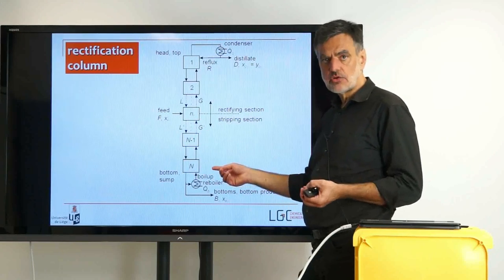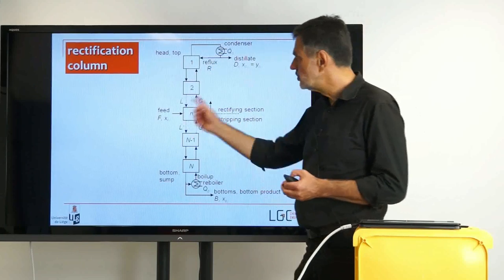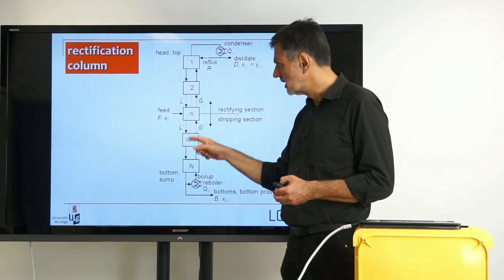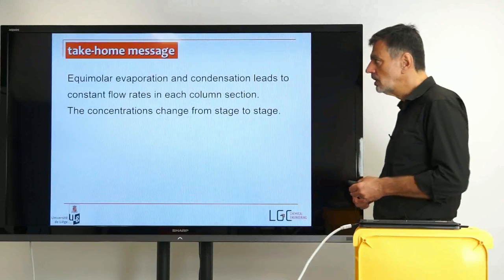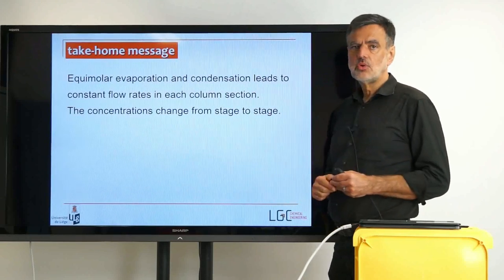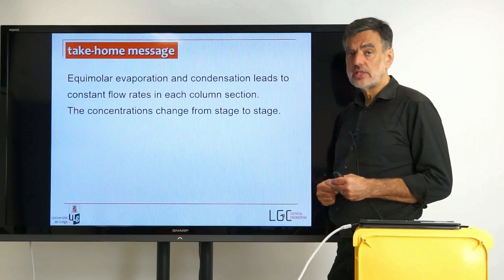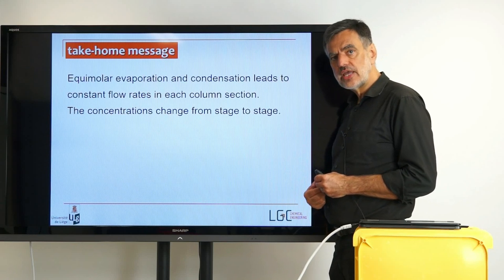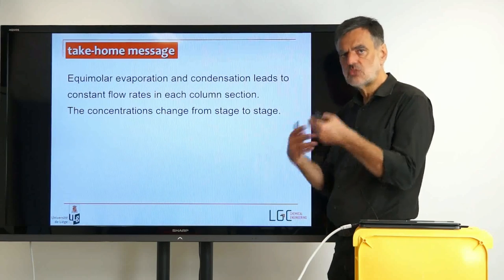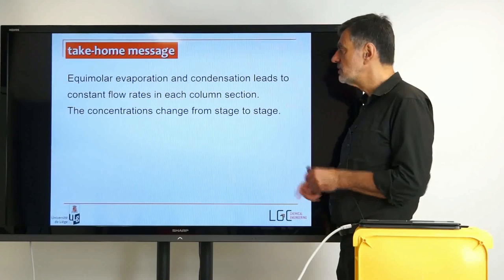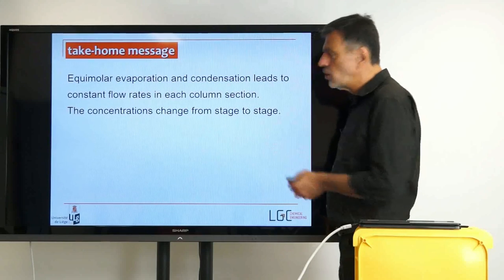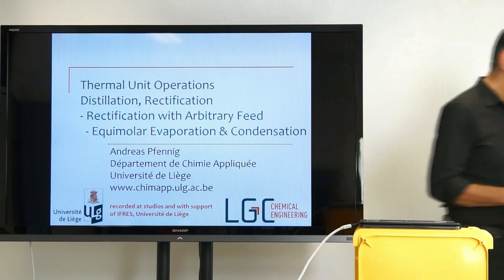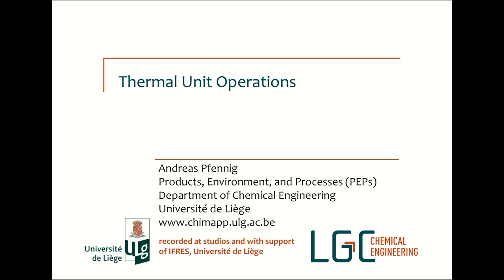In the stripping section the variables carry a prime: L-dot prime and G-dot prime; in the rectifying section they don't. The nomenclature changes at the stage where the feed is entering. To summarize: we have seen equimolar condensation and evaporation, and that the flow rates are constant along the column — at least in each column section. The concentrations change from stage to stage, as that is the separation effect we want to achieve, as discussed with the distillation cascades. Thank you very much.